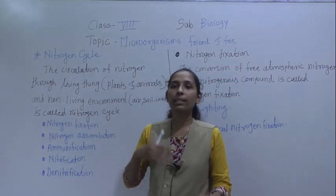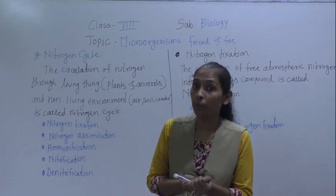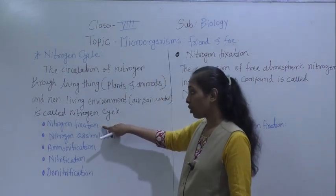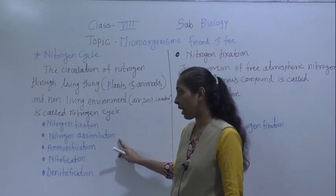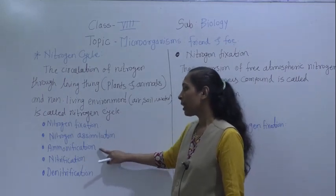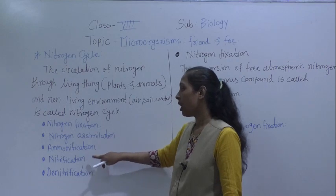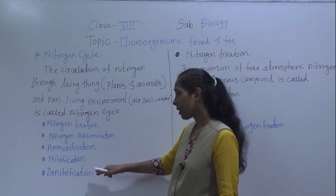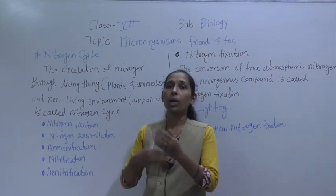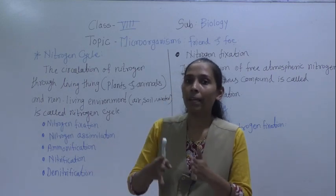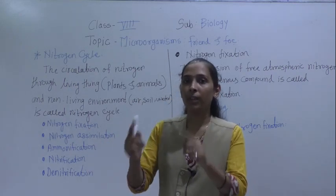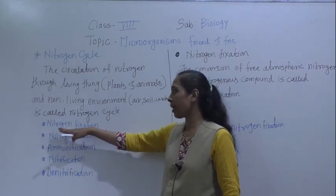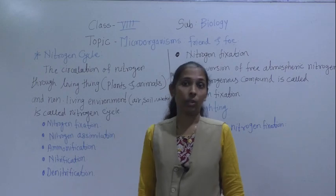The nitrogen cycle involves certain types of processes. The first process is nitrogen fixation. The next one is nitrogen assimilation. The third one is ammonification. The fourth one is nitrification. And the last one is denitrification. All these processes we are going to see deeply, one by one.